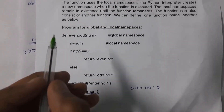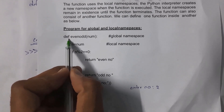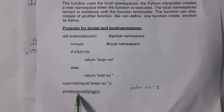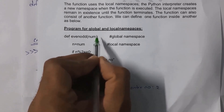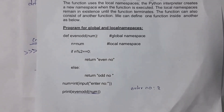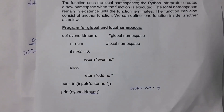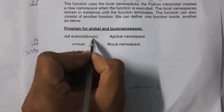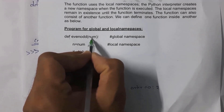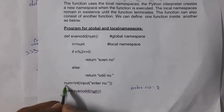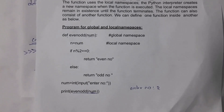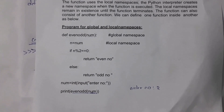I define the function using def even_odd(num). This function takes one argument, num. Inside this function I write separate code to determine whether the number is even or odd. The parameter num passed into the even_odd function is referred to as part of the global namespace, because num was declared outside the function.